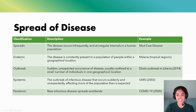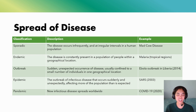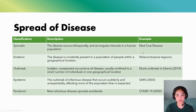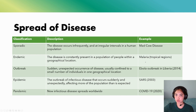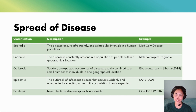Another one is endemic, where the disease is always present in the population but only within a certain geographical location. A good example of this is malaria around the tropical regions, and that is due to all of the mosquitoes that are present there.